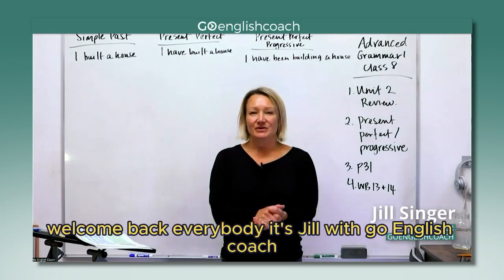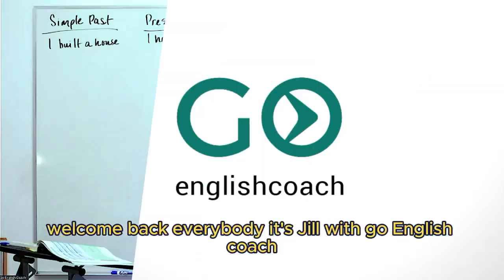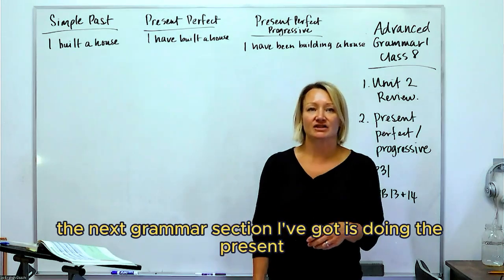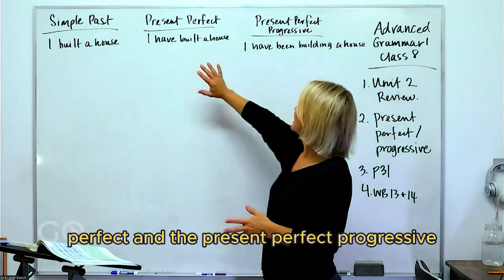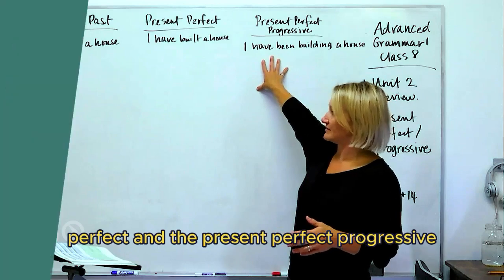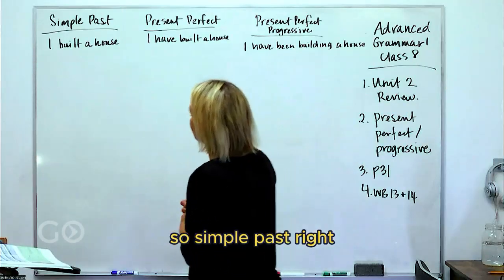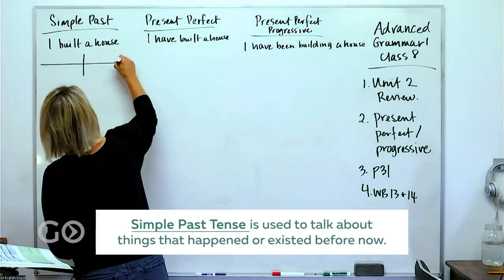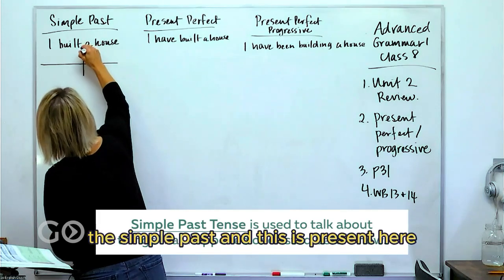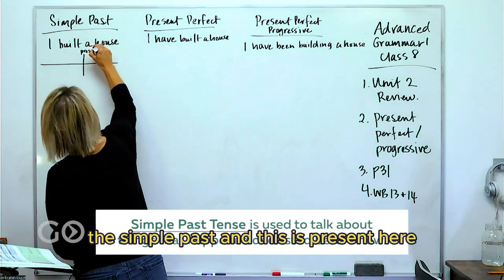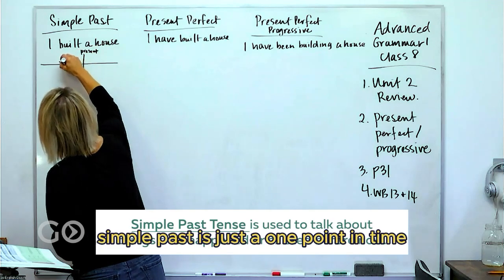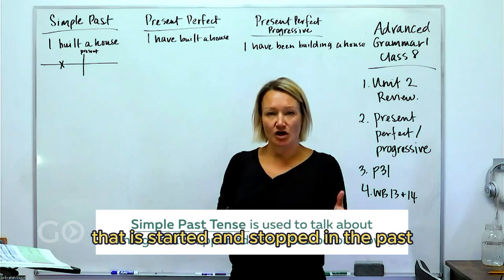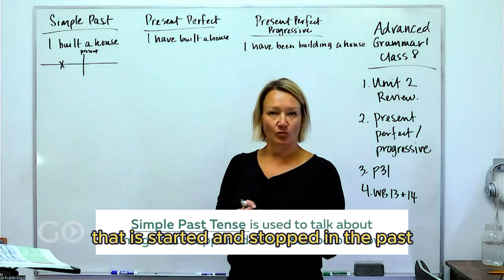Welcome back everybody, it's Jill with Go English Coach. So we've got the next grammar section — the present perfect and the present perfect progressive. Looking at our little timeline, simple past is just one point in time that started and stopped in the past.